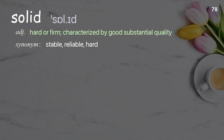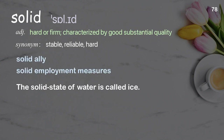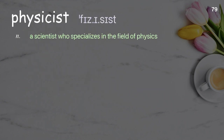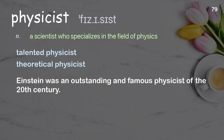Solid: hard or firm; characterized by good substantial quality. Examples: solid ally, solid employment measures. The solid state of water is called ice. Physicist: a scientist who specializes in the field of physics. Examples: talented physicist, theoretical physicist. Einstein was an outstanding and famous physicist of the 20th century.